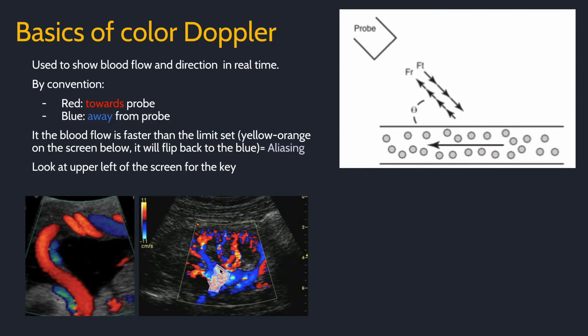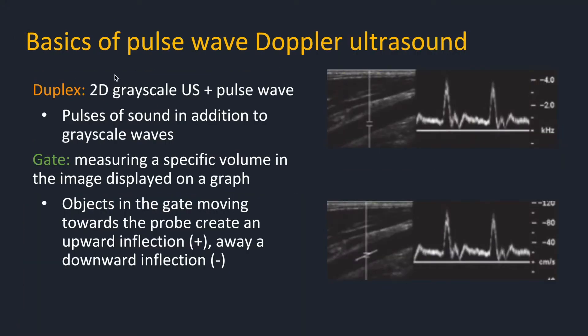This is an example of aliasing in the main renal artery. Pulse wave Doppler is similar to color Doppler, but instead of looking at an area as a whole, it investigates a specific volume between the gate. Rather than show direction as color, it will show direction on the graph. This allows for more sophisticated analysis such as peak velocity, ratio of diastolic and systolic flow, and more.